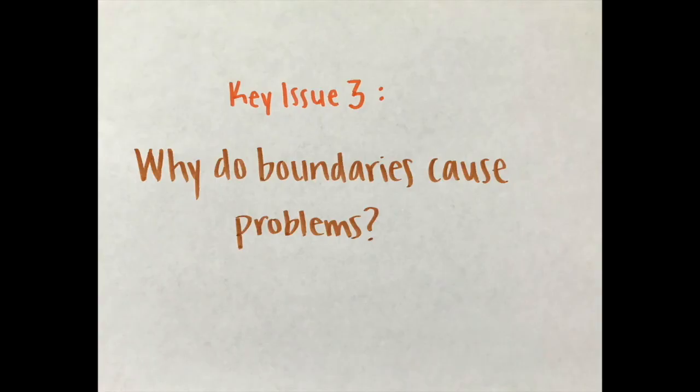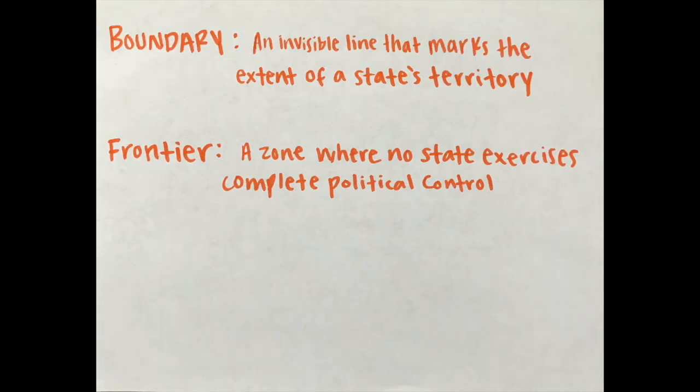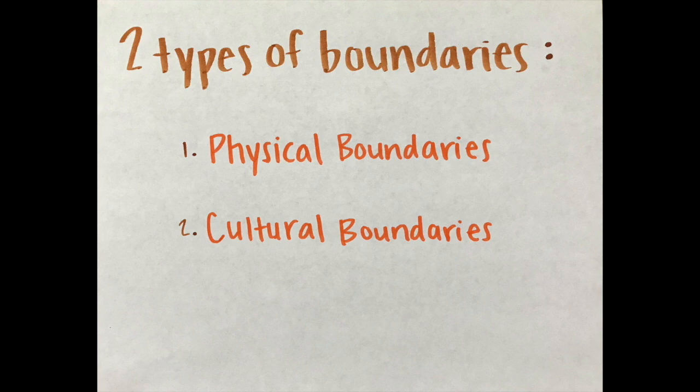Key Issue 3: Why do boundaries cause problems? A state is separated from its neighbors by a boundary, which is an invisible line that marks the extent of a state's territory. A frontier is a zone where no state exercises complete political control. Frontiers between states have been replaced by boundaries. There are two types of boundaries: physical boundaries, which coincide with significant features of the natural landscape, and cultural boundaries, which follow the distribution of cultural characteristics.